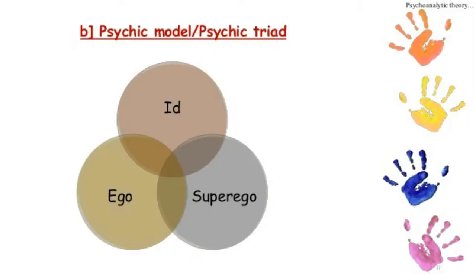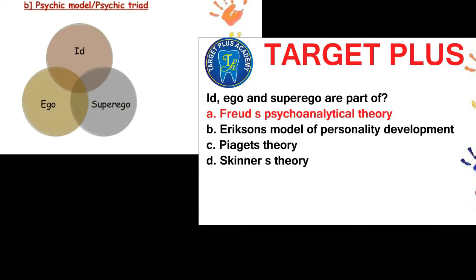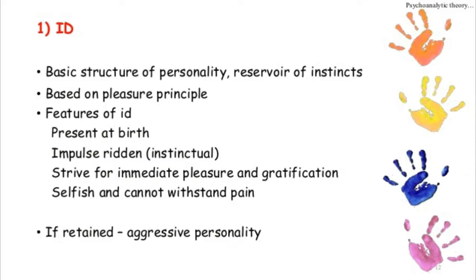Next is the psychic model. The psychic structure proposed by Freud is composed of three parts: id, ego, and superego. Id, ego, and superego are part of Freud's psychoanalytical theory. The id comprises the basic part of personality structure that contains the basic drives. It is present since birth, impulse-ridden, and strives for immediate pleasure or gratification. Thus, id is governed by the pleasure principle. Examples include hunger, thirst, sexual drive, and aggression.